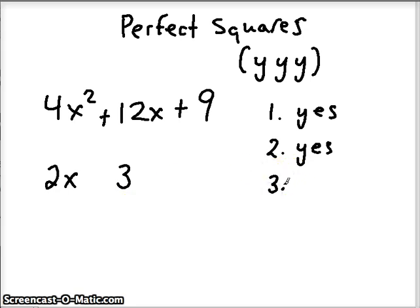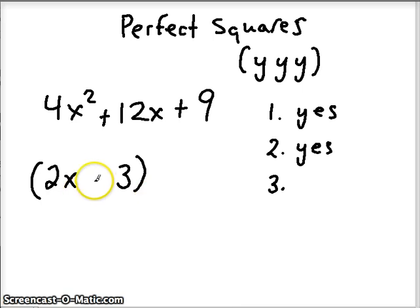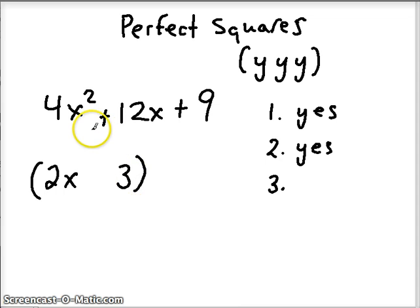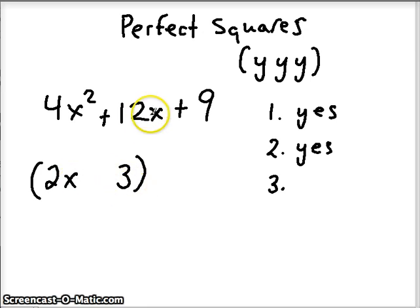The third question is probably the most confusing, but if we've already written everything down, we can visualize it. We want twice the product of these factors — whatever we wrote down, we multiply them and then multiply by 2; we double the product. Is that equal to the middle term? If the answer is yes, we have a perfect square. So: 2x times 3 is 6x, doubled is 12x. Yes — so we have ourselves a perfect square.